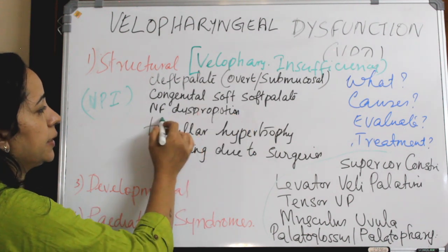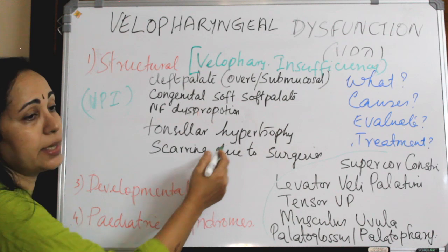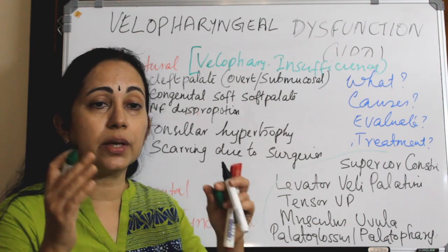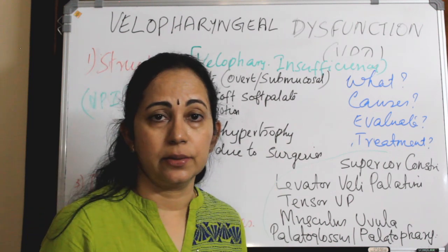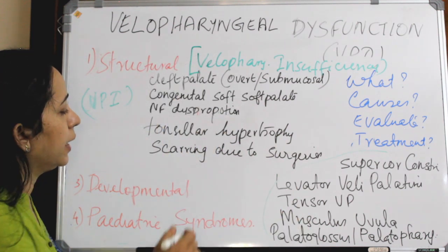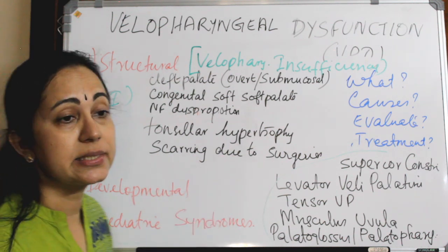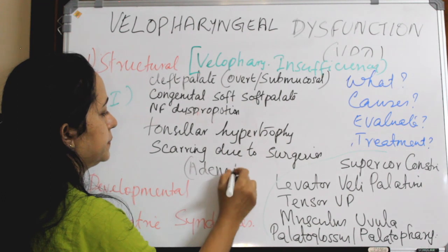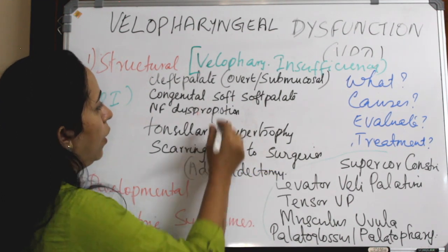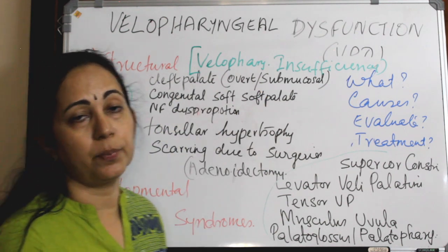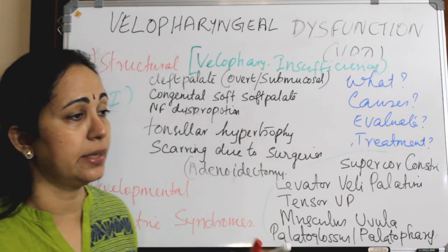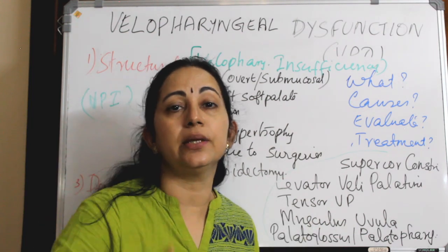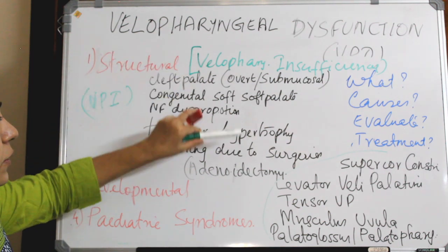When these muscles are not working properly or there is congenital softness, this is called congenital soft palate. Other structural causes include nasopharyngeal disproportion, tonsillar hypertrophy - which causes inadequate functioning of these sphincters so the mechanism does not work properly - and scarring due to surgeries such as adenoidectomy, which is common, post cleft palate repair, or any surgeries in the nasopharyngeal area causing scarring and leaving the velopharyngeal port wide open so air leaks through.